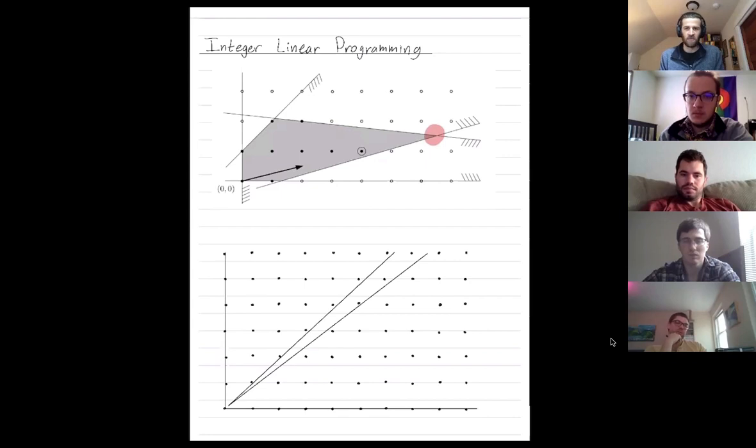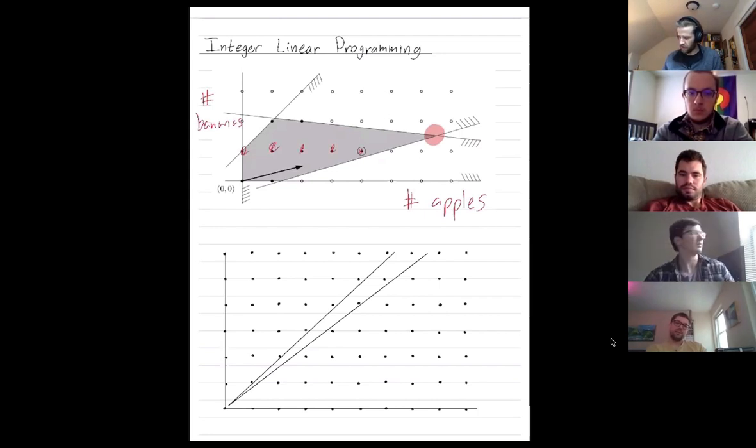In integer linear programming, you're constraining your variables to take discrete values. So maybe the x variable is the number of apples you want to eat, and perhaps the y variable is the number of bananas you want to eat. And you don't want to leave over a non-integer portion of an apple, right? So that's why you're restricting yourself to these integer possibilities where you eat an integer number of apples or bananas.